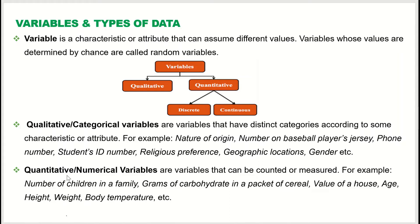Next are the quantitative or numerical variables. These are variables that can be counted or measured. For example, the number of children in a family — it can be two, three, or four — is a quantitative or numerical variable. Grams of carbohydrate in a packet of cereal is a pure number, so it is quantitative. The value of a house at seven hundred thousand dollars is also an example of a quantitative or numerical variable.